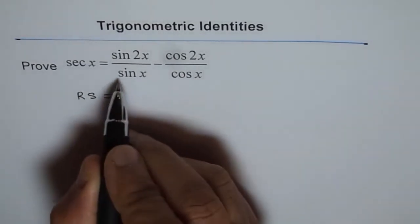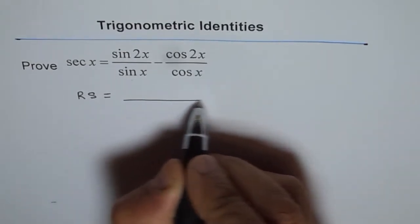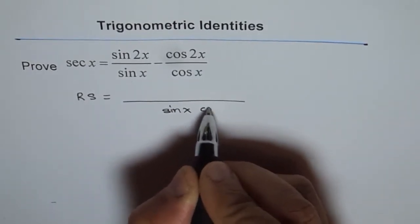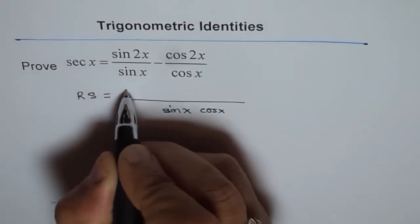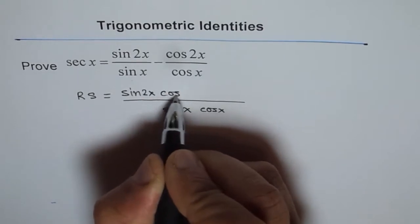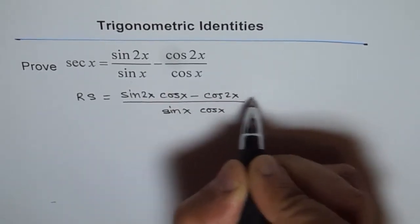And right side equals, let us take common denominator of sin x cos x. So, we have sin x cos x, then we get sin 2x cos x minus cos 2x sin x.